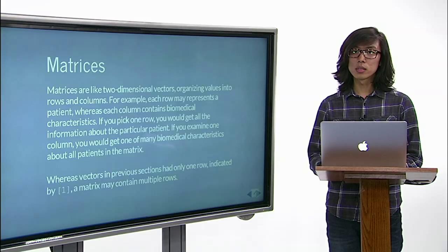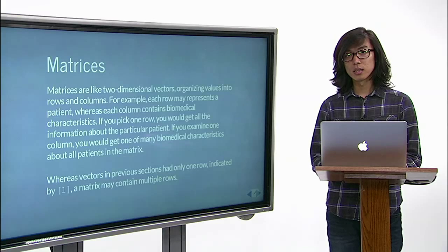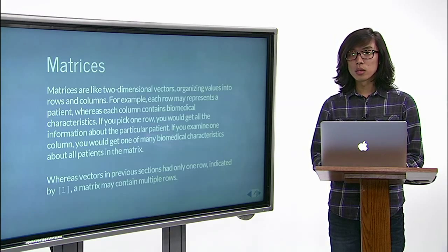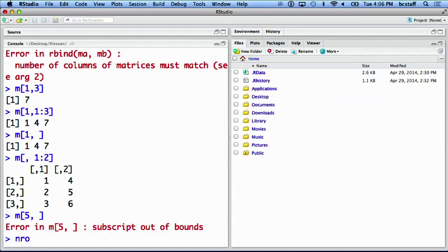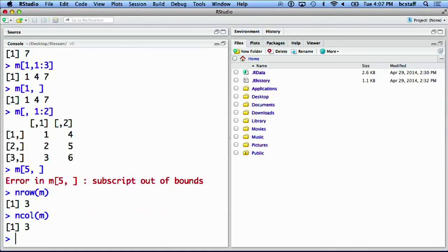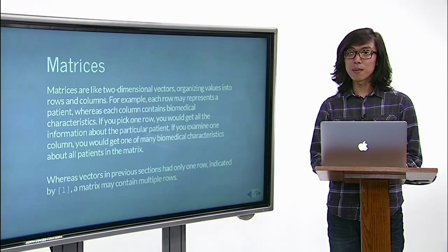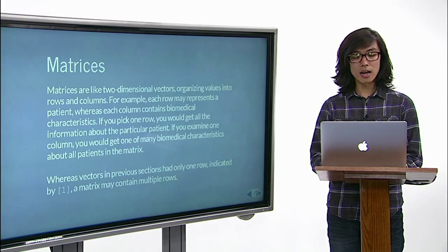Of course, if you have a large matrix or have recently loaded a matrix, you may want to ask R the number of rows or the number of columns for your matrix. nrow is a function that provides number of rows, and ncol provides a number of columns. Or simply the function dim, shortened for dimension, returns both the number of rows and columns.